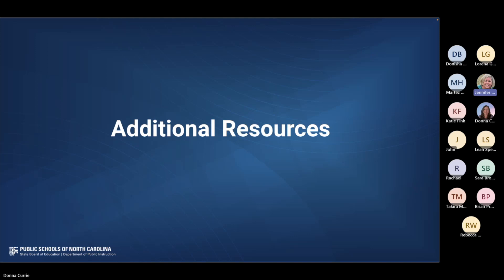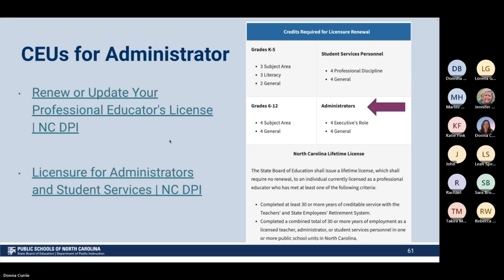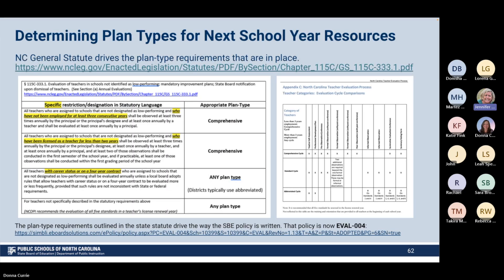A few additional resources: these are the CEUs required for administrator renewal. Administrators need four executive role credits and four general education credits. There are links to help with updating your license and the licensure itself. There are also resources for determining plan types for the next school year, based on general statute information — specific guidelines for what type of plan should be assigned to your teacher based on their ratings.